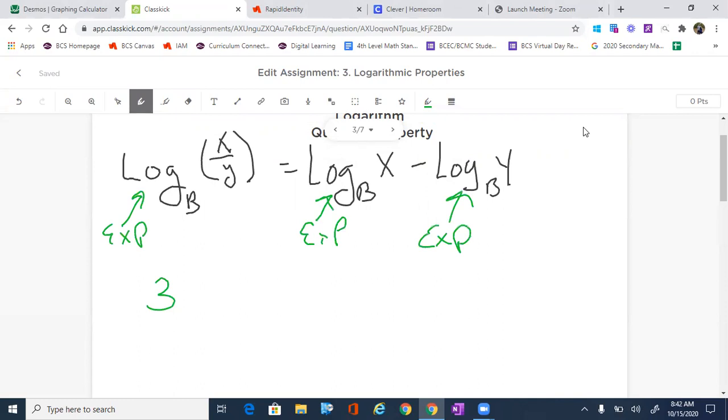so for example, like 3 to the 4th divided by 3 squared, well, what do we do? We subtract those exponents because the bases are the same. So I would write 3 to the 4th minus 2 in the exponent, and then I would say that is 3 squared. So let's make a little bit more sense of this statement.